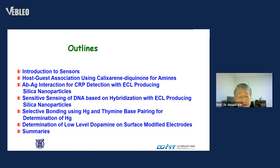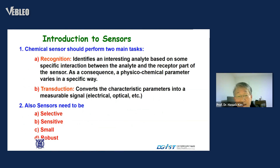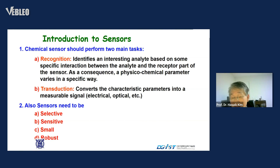Finally, determination of low-level dopamine on surface-modified electrodes before I summarize my talk. Sensors perform two very important functions: first, recognition, and second, transduction. Recognition, if we recognize very selectively, will eliminate all interfering effects. And transduction converts the characteristic parameters into measurable signal, generally electrical or optical.